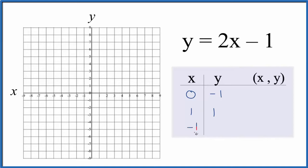And finally let's put minus 1 in. So 2 times minus 1 is minus 2, minus 1, that gives us minus 3.